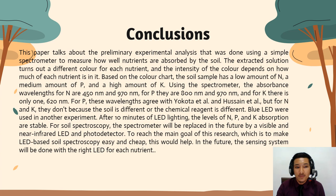Using the spectrometer, the absorbent wavelengths for N are 450 nm and 970 nm. For P they are 800 nm and 970 nm. For K, there is only one peak at 670 nm. For P, this wavelength agrees with Yokota and Usain, but for N and K they don't agree, possibly because the soil is different or the chemical agent is different. Two LEDs were used in the other experiments.